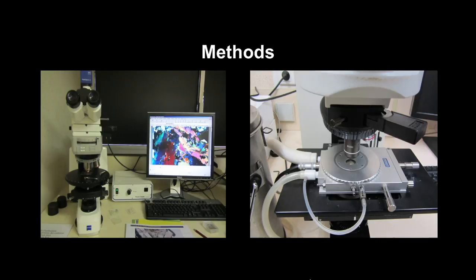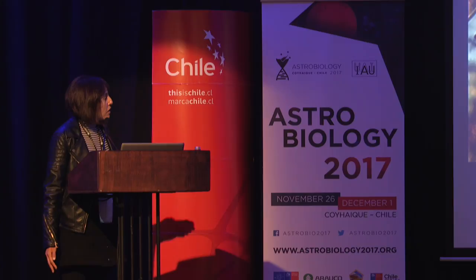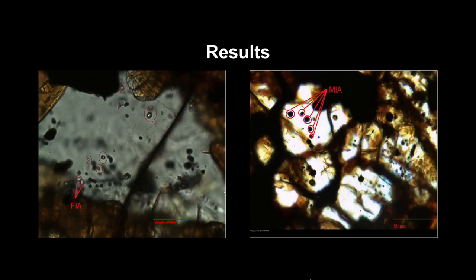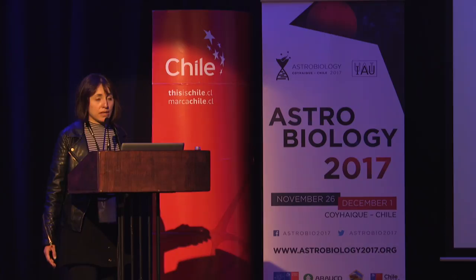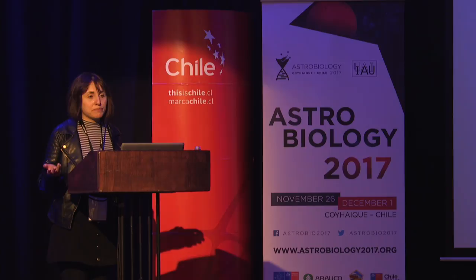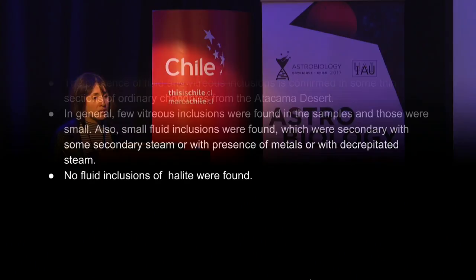Here I found some gases. We have a tiny family here of fluid inclusions, meaning they were trapped at the same temperature and pressure conditions. Here we find melt inclusions that are also a family. This crystal is olivine, and this crystal I think is pyroxene. I have to mention something: I did not make a microthermometry study because the polished thin section that was loaned to me was not the proper cut — I needed a double-polished thin section. So I could only complete the first part of this study.